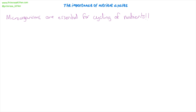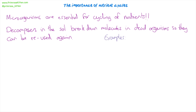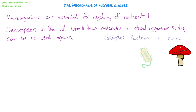Decomposers are types of microorganisms that live in soil, and they break down molecules in dead organisms — plants or animals — so those molecules can then be reused. They're released into the soil or into the atmosphere so they can be reused. The decomposers are actually feeding on this dead material. Most decomposers are either types of bacteria or types of fungi. These microscopic fungi and bacteria live in the soil, and they're the ones that carry out decay.